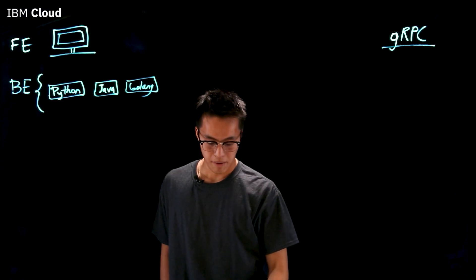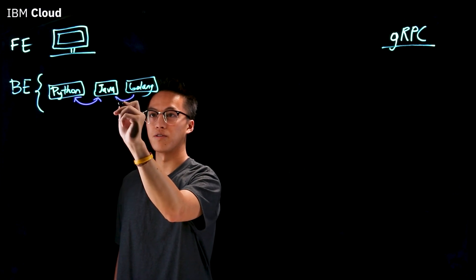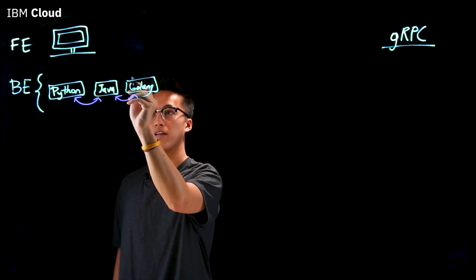And what I'm going to do is I'm going to go ahead and draw arrows between them to signify that these microservices need to connect and communicate with each other.